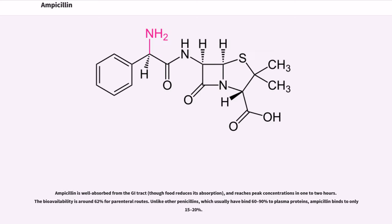Ampicillin is well absorbed from the GI tract, though food reduces its absorption, and reaches peak concentrations in 1-2 hours. The bioavailability is around 62% for parenteral routes. Unlike other penicillins, which usually bind 60-90% to plasma proteins, ampicillin binds to only 15-20%.